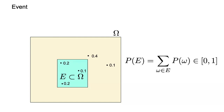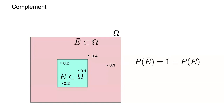Events are things like 'it's raining today,' 'I have my umbrella today,' 'we are at ETH today.' An event is a set of all worlds satisfying some condition. You can compute the probability of events like 'it's raining today in Zurich.' The complement of an event E — if E is 'it's raining in Zurich' — is 'it's not raining in Zurich,' which is the rest of omega. The probability of the complement is one minus the probability of the event.